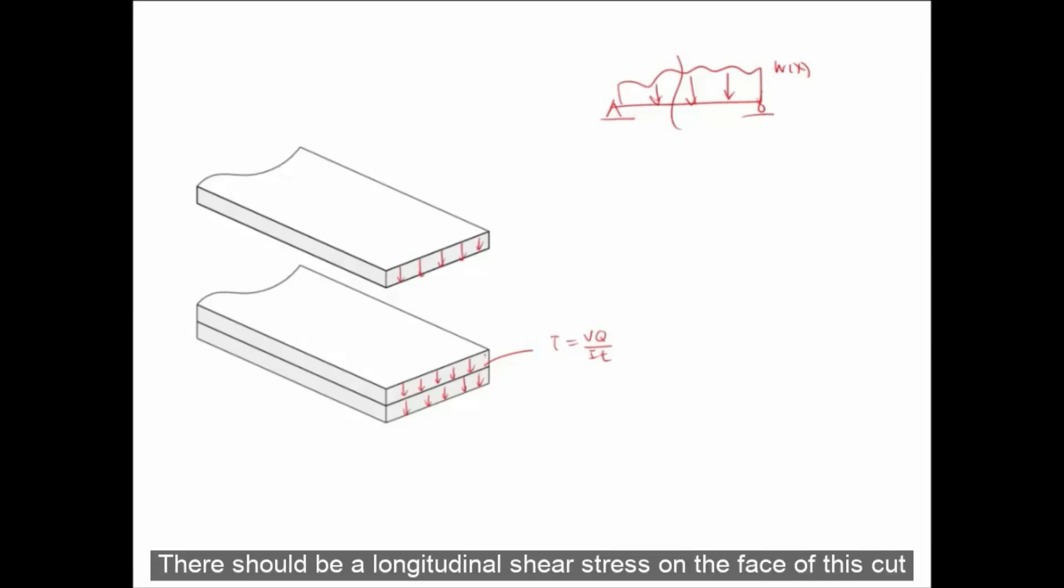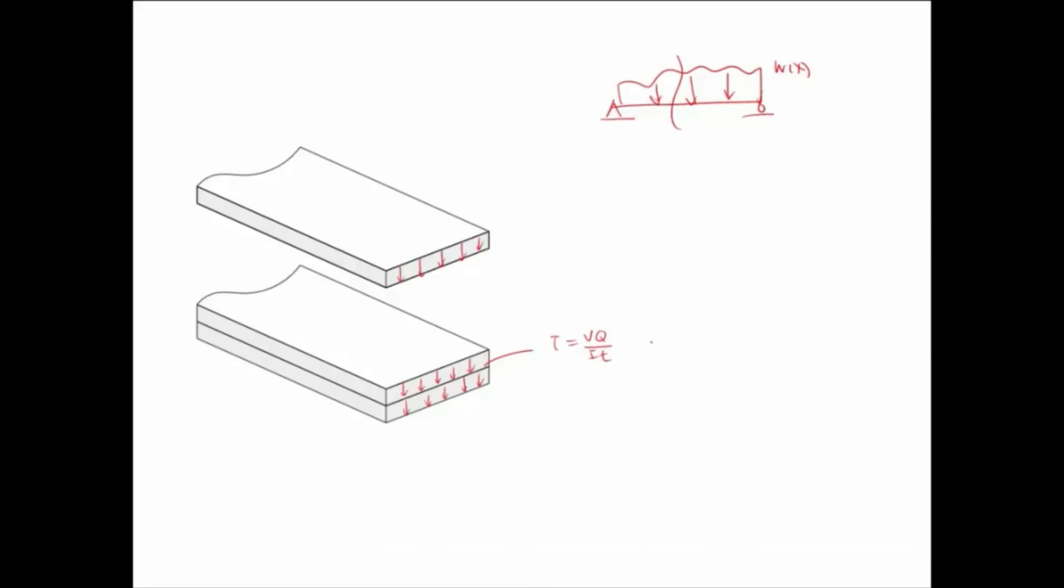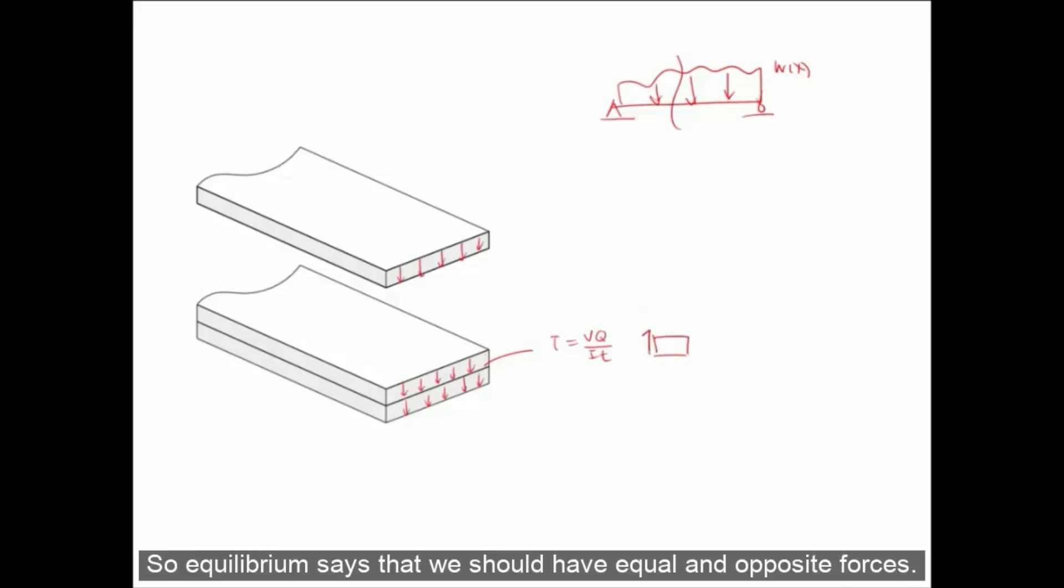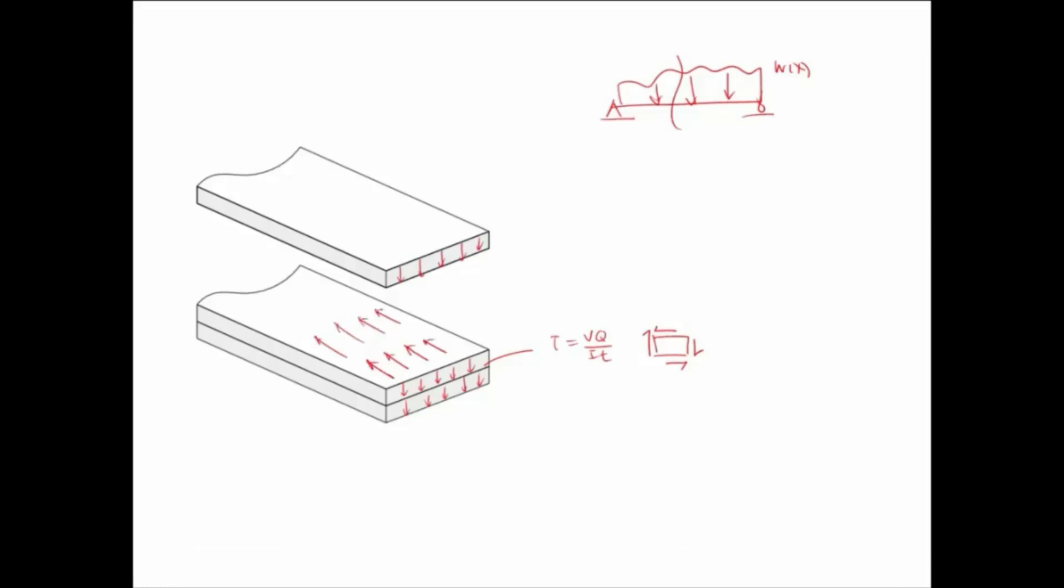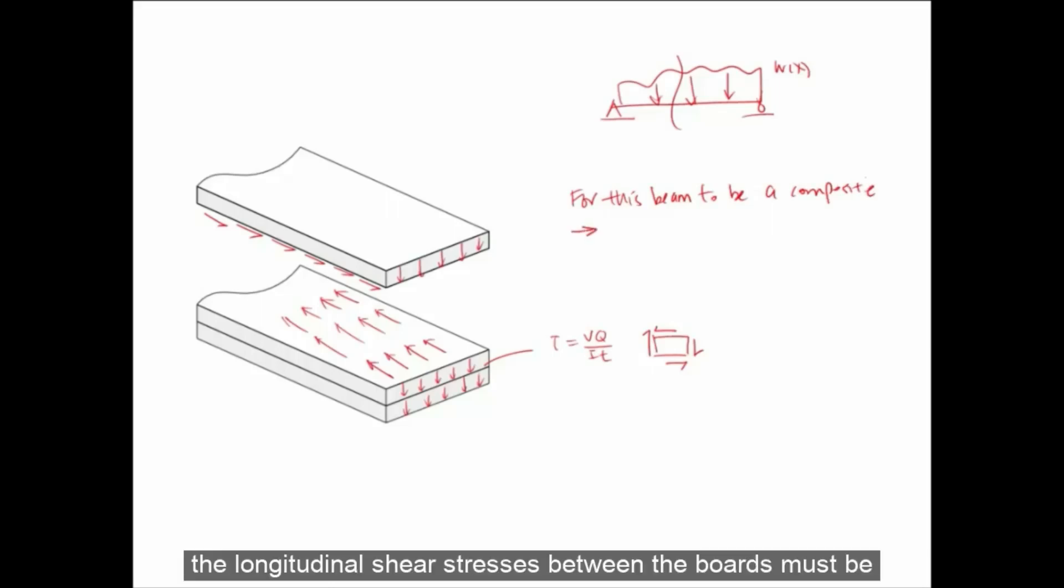There should be a longitudinal shear stress on the face of this cut due to equilibrium. So equilibrium says that we should have equal and opposite forces. So on this face, we should have forces running in this direction, and on the other side of the cut, we should have force running in the opposite direction. And for this beam to be a composite, the longitudinal shear stresses between the boards must be transferred.